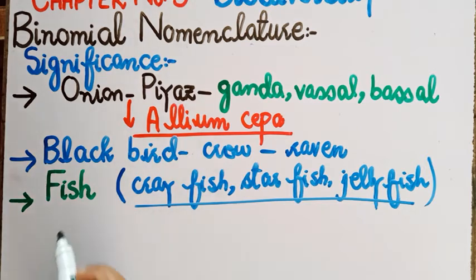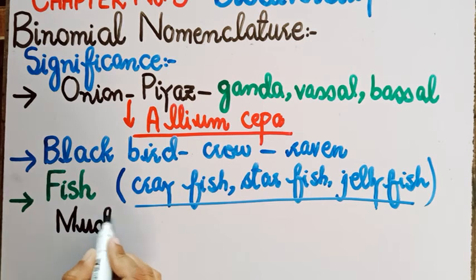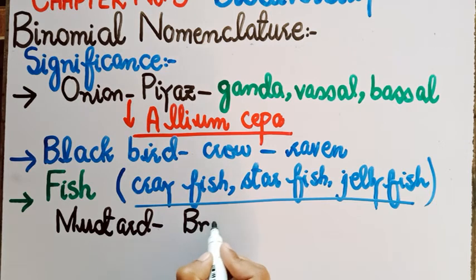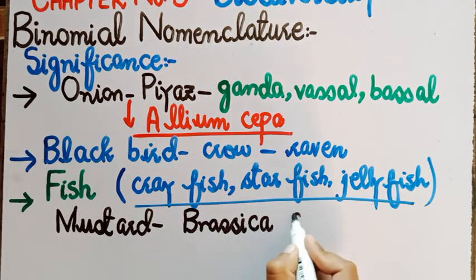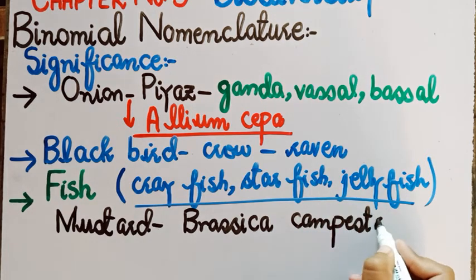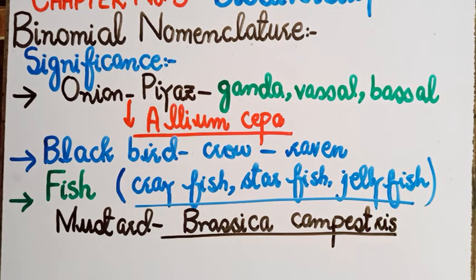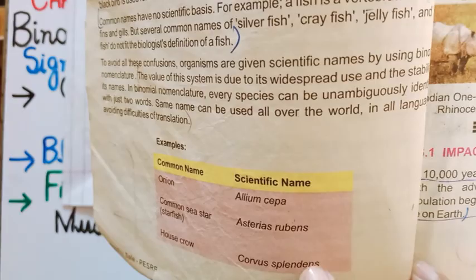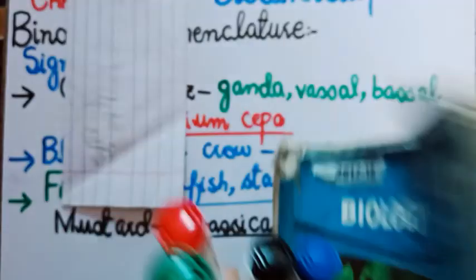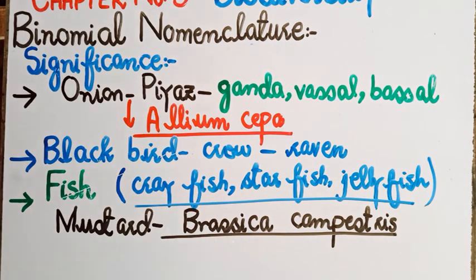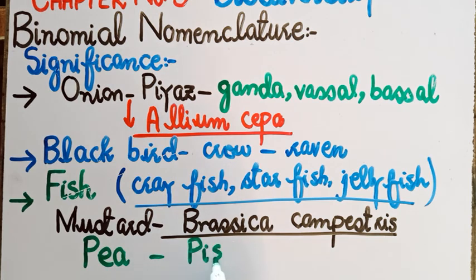ہم نے پہلے chapter میں discuss کیا تھا کہ mustard plant کا scientific name Brassica campestris ہوتا ہے۔ جب بھی Brassica campestris کا نام آئے گا، scientists کے ذہن میں آئے گا کہ mustard plant کی بات ہو رہی ہے۔ اسی طرح کچھ scientific names ہماری book میں mentioned ہیں: onion کا Allium cepa، starfish کا Asterias rubens، house crow کا Corvus splendens، اور pea plant کا Pisum sativum۔ یہ scientific names جو آپ کی book میں mentioned ہیں انہیں لازمی تیار کریں کیونکہ کہیں سے بھی MCQ آ سکتا ہے۔